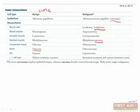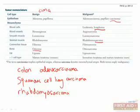Let's do a quick question. Which of the following malignancies is most likely to stain positive for vimentin? Colon adenocarcinoma, squamous cell lung carcinoma, or rhabdomyosarcoma? If you remember that vimentin stains for mesenchymal tissue, then you immediately know that the answer is rhabdomyosarcoma, since it's the only one that's a mesenchymal tumor.